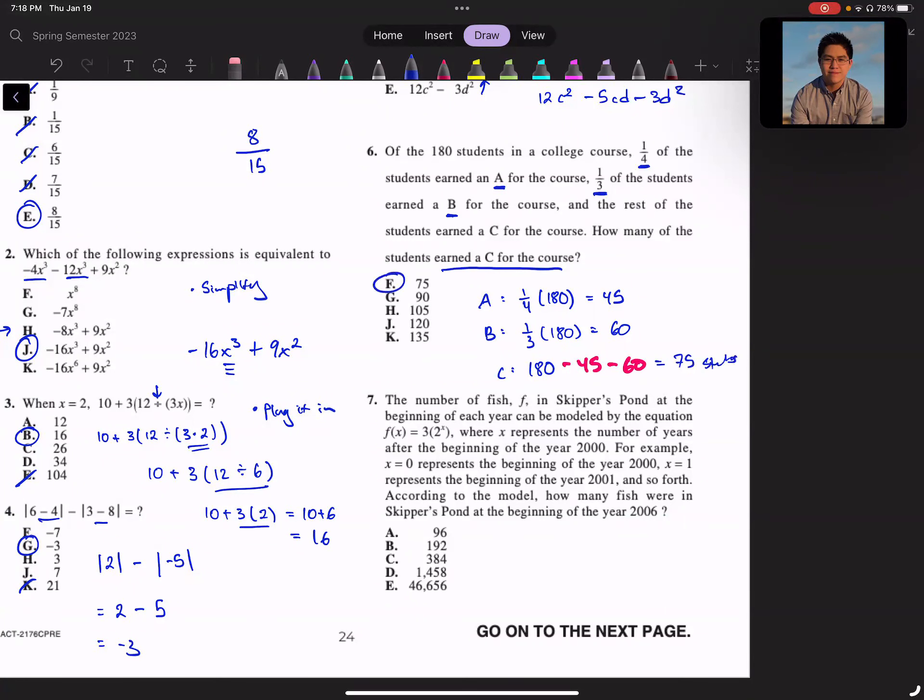So in that case, you take 180 - 45 - 60, and you would get 75 students. And if you think about it, that makes sense, because the fourth and the third is quite a bit of the class. So you would probably want to think that more majority got the A and the B. So probably would be 135 or 120, and so one of those lower numbers would make the most sense.